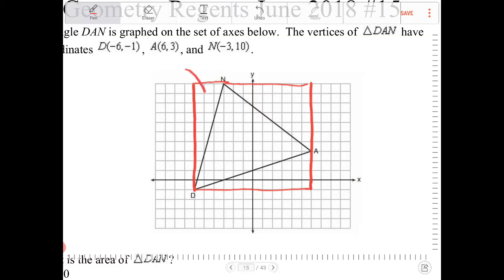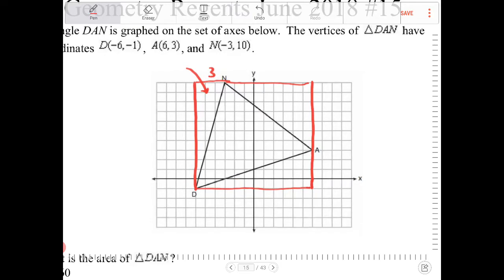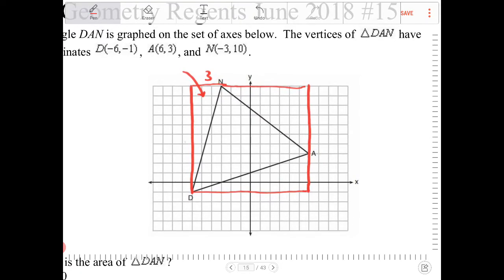So this triangle here, the area of that - this is 3, the side length on the left there, that's 11. So the area is going to be 33 halves.